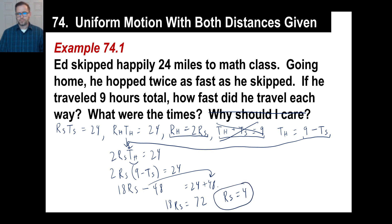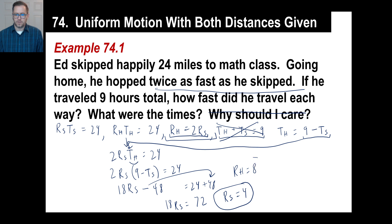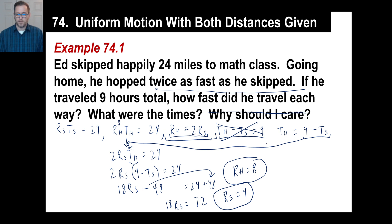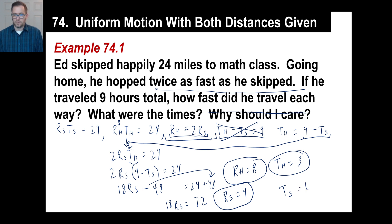Now we've got the rate of skipping is four miles an hour. The rate of hopping is twice as fast, so the rate of hopping is eight. For the times: eight times the time of hopping equals 24, so the time of hopping is 24 divided by eight, which is three. And since he went nine hours total, the time of skipping is six.